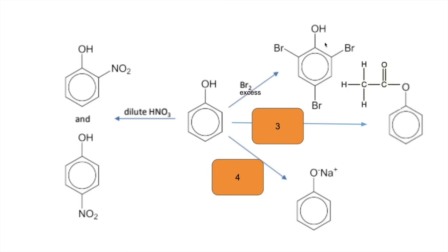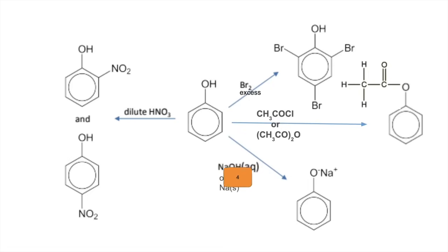Number three: how do you make a phenyl ester such as phenyl ethanoate? You've got a couple of choices — you could either use ethanoyl chloride or ethanoic anhydride. Number four: how do you get the sodium phenoxide salt from phenol? Two options — you could either react it with sodium hydroxide or sodium metal.